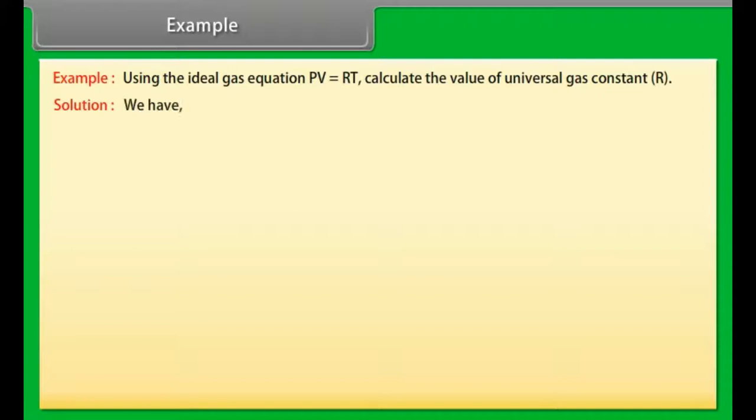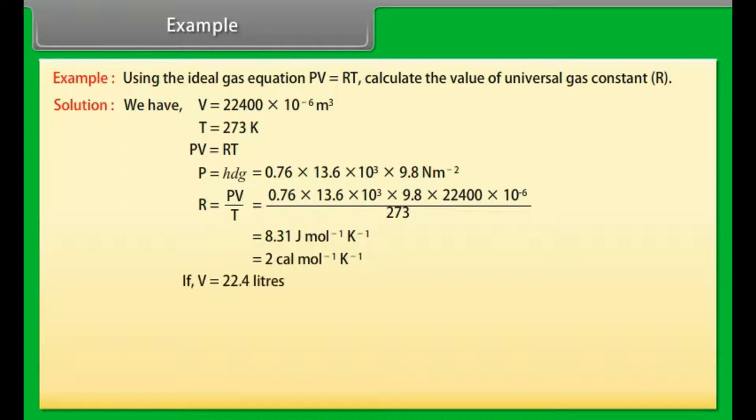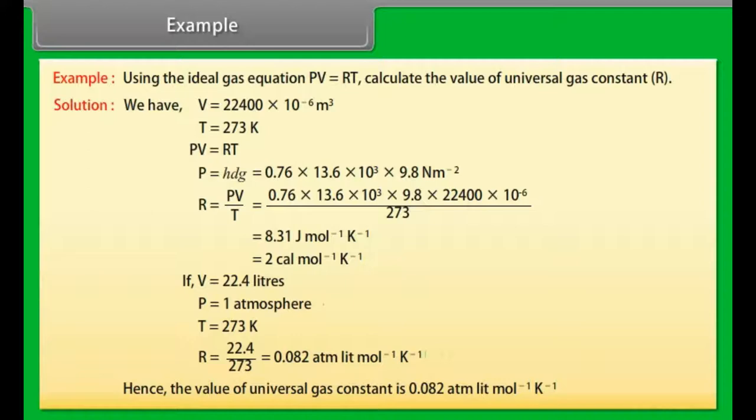Let us take an example of kinetic theory of an ideal gas. Using the ideal gas equation PV equals RT, calculate the value of universal gas constant. We have V equals 22,400 × 10⁻⁶ cubic meters, T equals 273 Kelvin. Now we calculate the value of R by putting the values. R equals PV/T equals 2 calories per mole per Kelvin. If V equals 22.4 liters, P equals 1 atmosphere, T equals 273 Kelvin, R equals 0.082 atm·liter per mole per Kelvin. Hence, the value of universal gas constant is 0.082 atm·liter per mole per Kelvin.